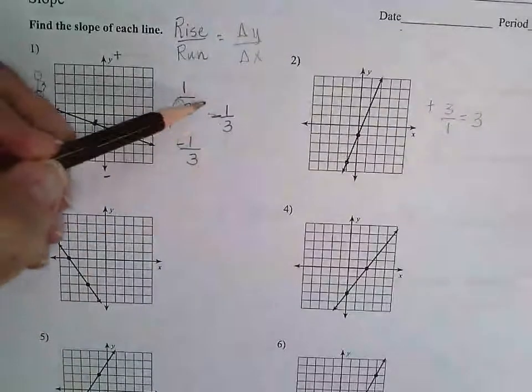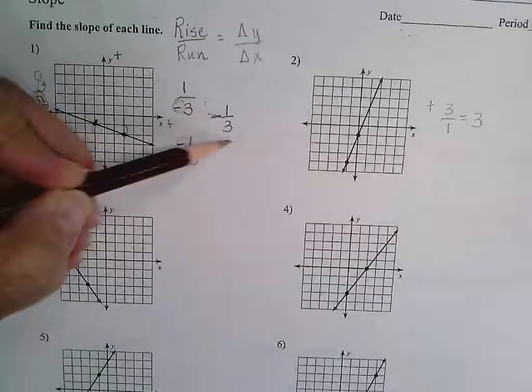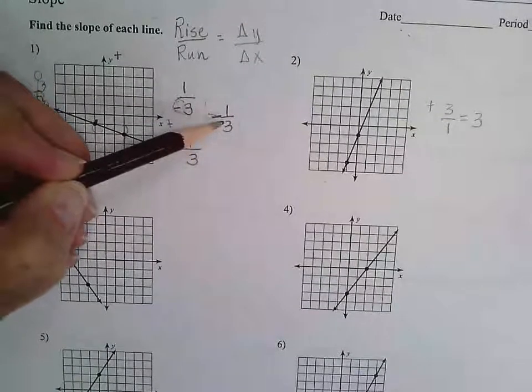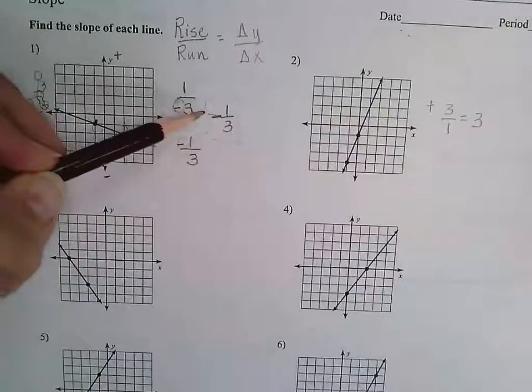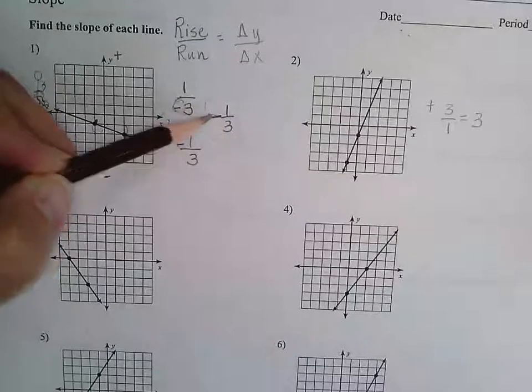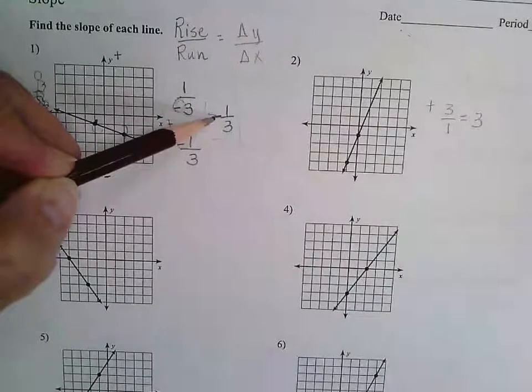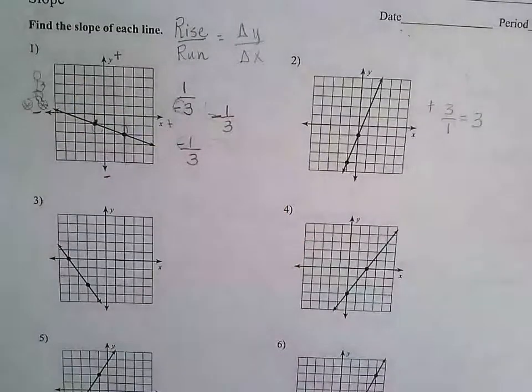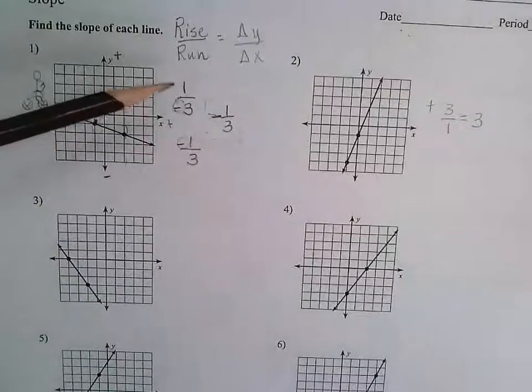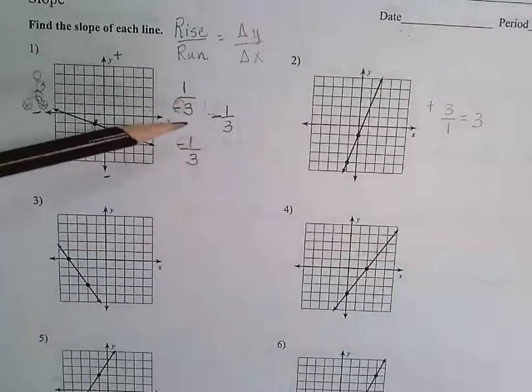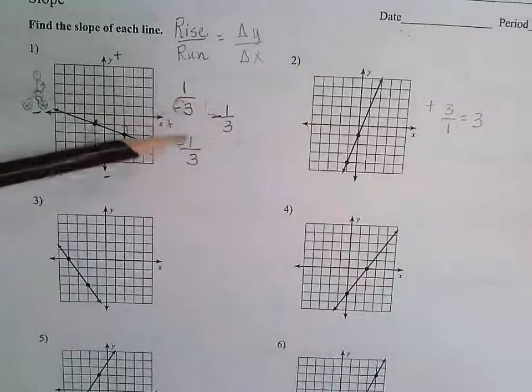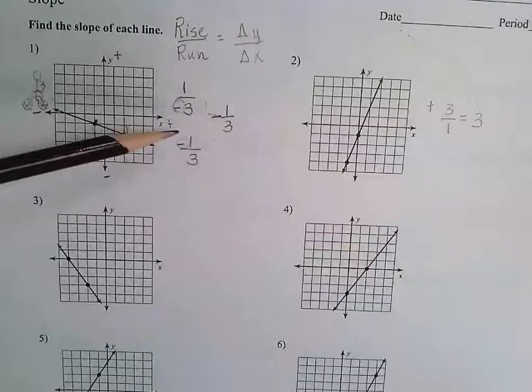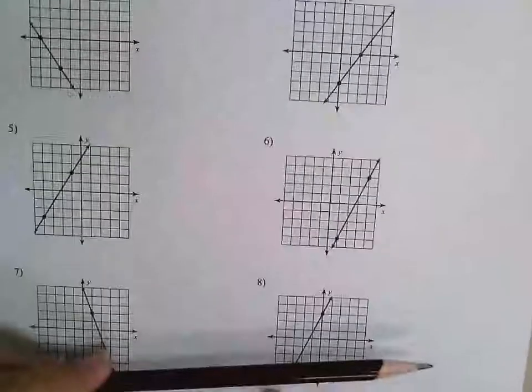However, as we've talked about before, because you can use counting for slope, it is typically represented in fractional form unless it can be simplified to an integer. We don't typically represent slope and I'm just saying typically. We don't typically represent slope with decimals. So don't change any of these to decimal form.